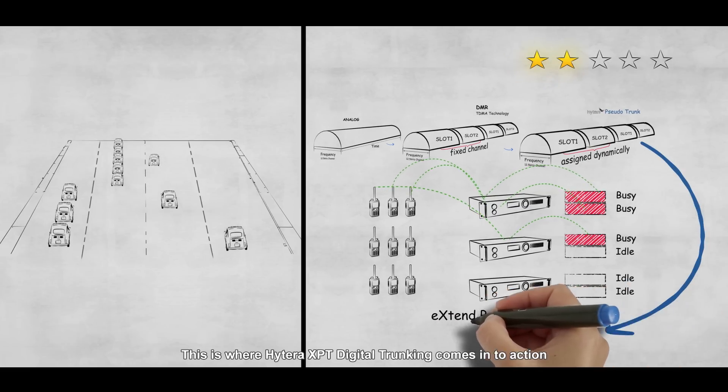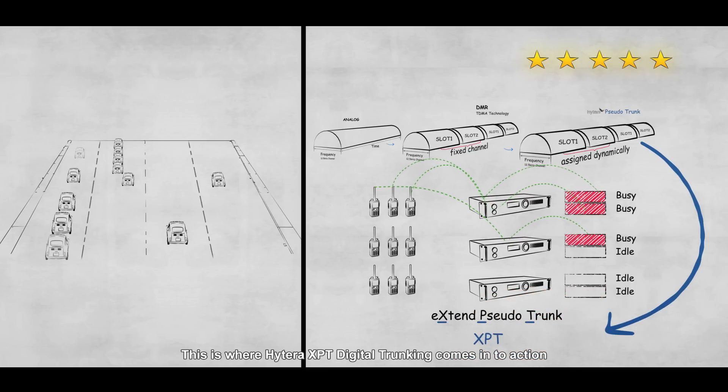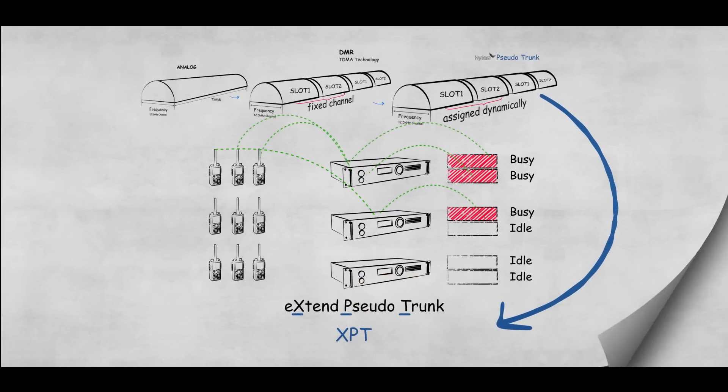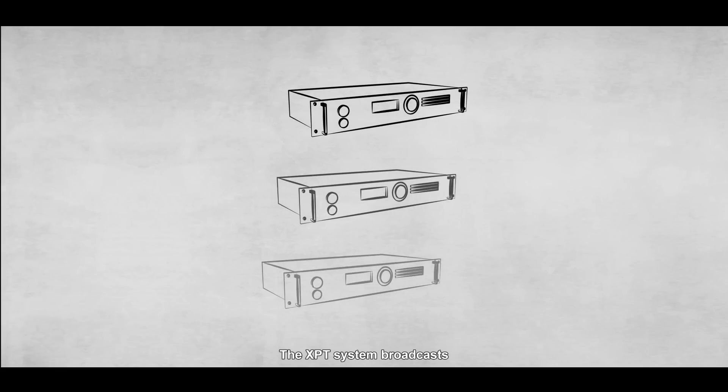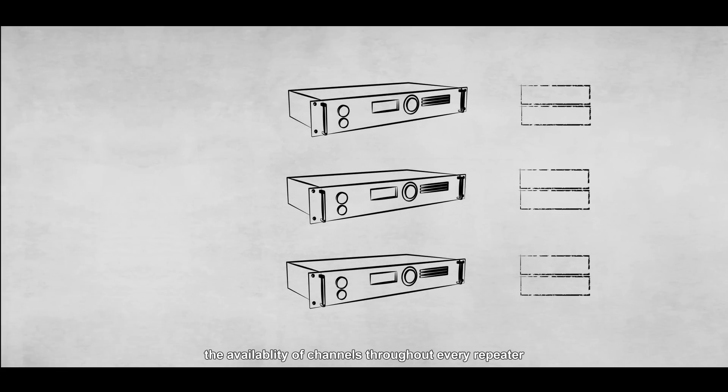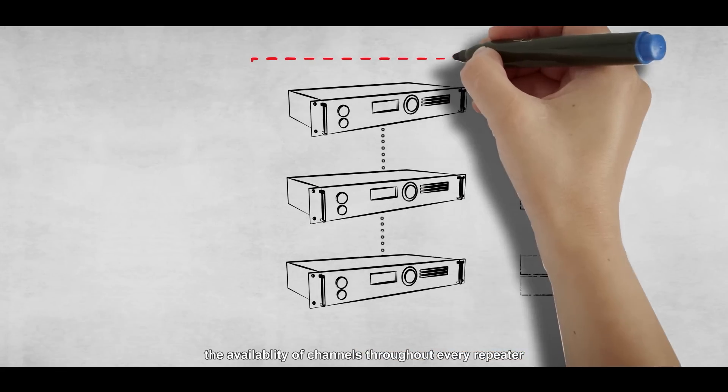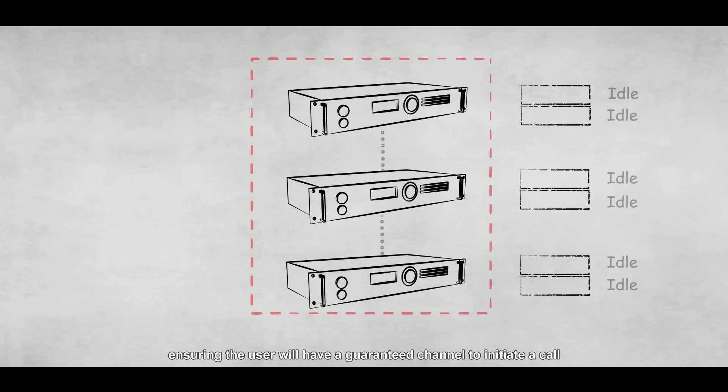This is where Hytera XPT Digital Trunking comes into action. So how does it work? The XPT system broadcasts the availability of channels throughout every repeater, ensuring the user will have a guaranteed channel to initiate a call.